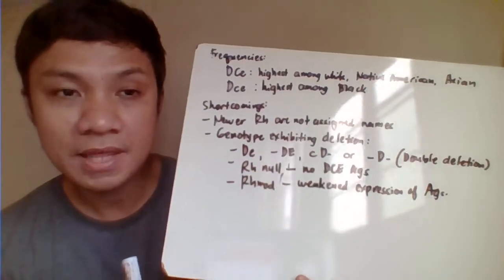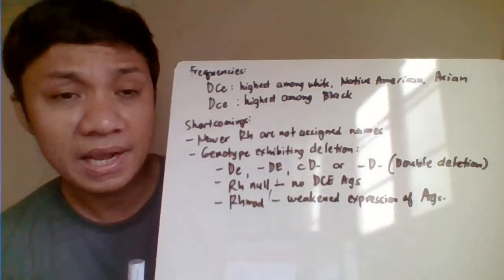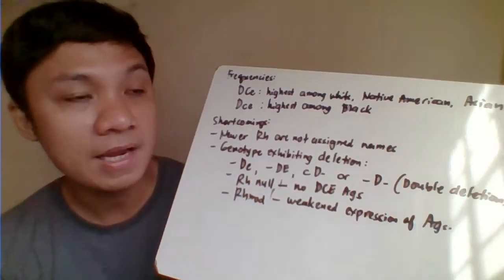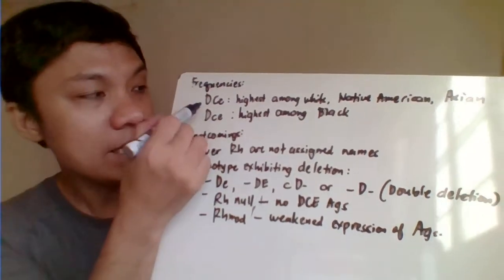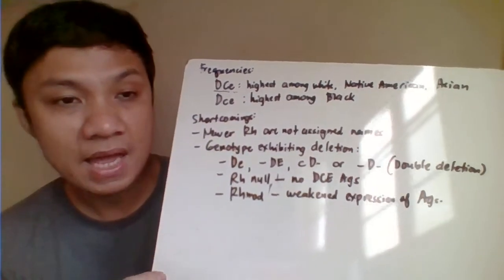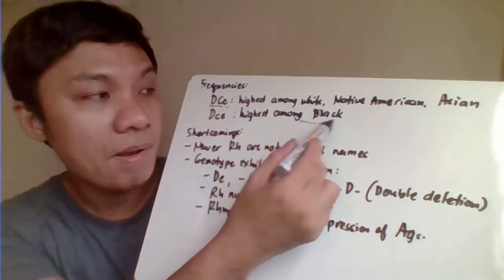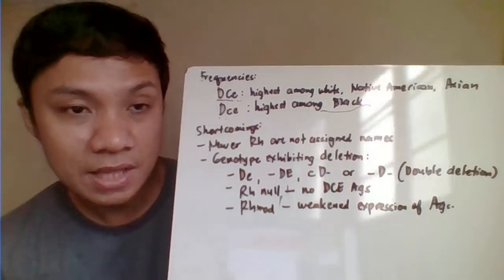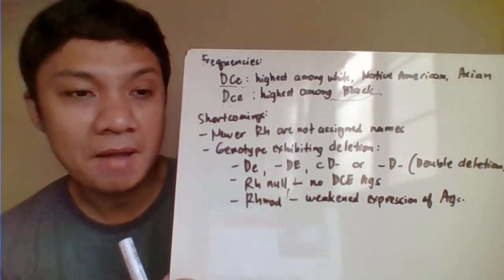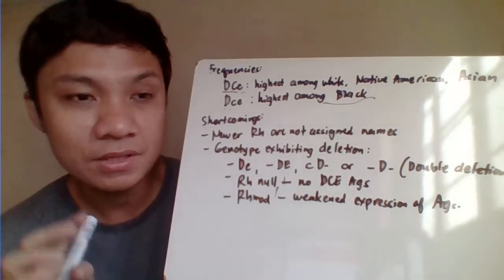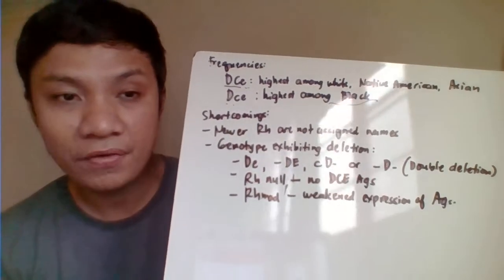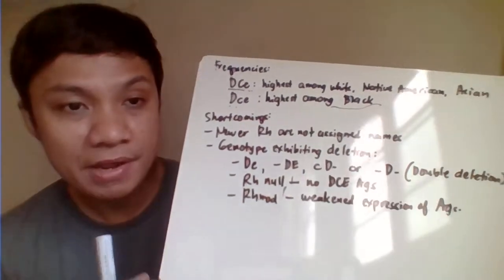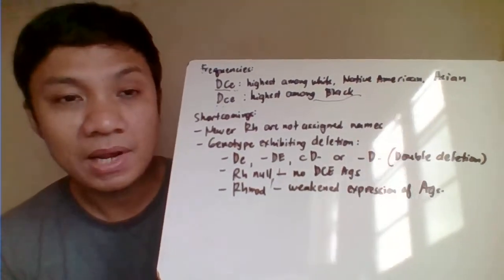There's a table in the PowerPoint for the frequencies or prevalence of different genotypes. Among Black, White, Native American, and Asian populations, the genotype D-big, C-big, E-small (DCe) would have the highest prevalence overall. Among the Black population, the genotype D-big, c-small, e-small (Dce) is the most prevalent.